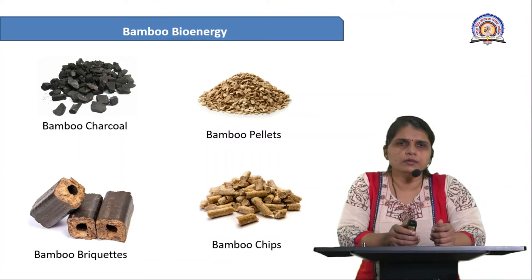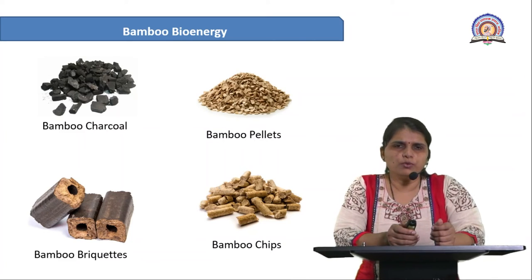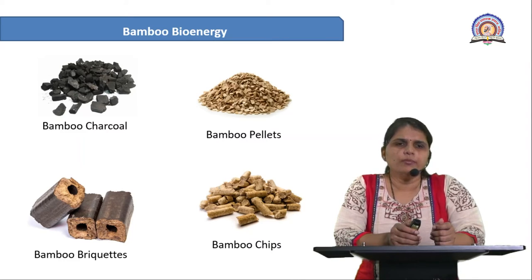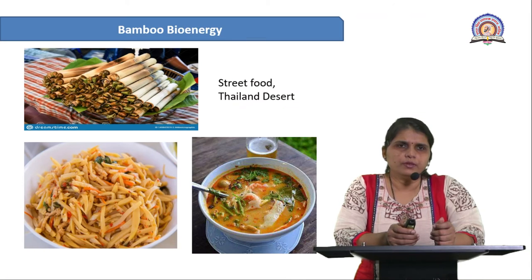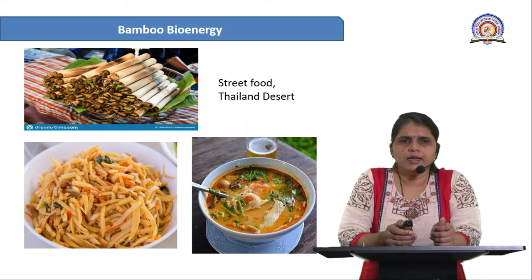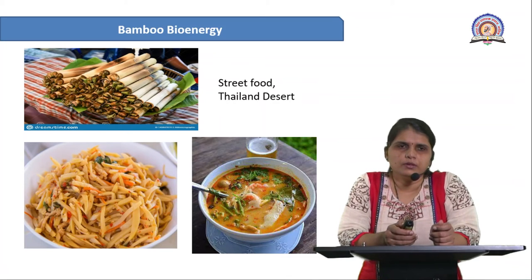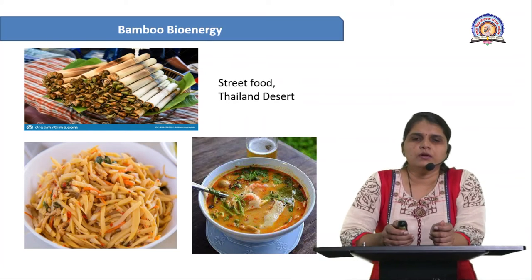Another product of bamboo is bamboo bioenergy — making bamboo charcoal and bamboo pellets for medicine. Bamboo is also used as a food source, including bamboo shoots. In countries like Thailand, bamboo is used to make bamboo snacks and bamboo curry.